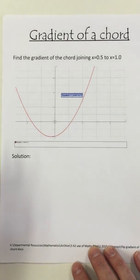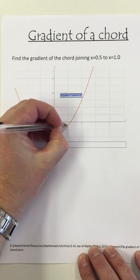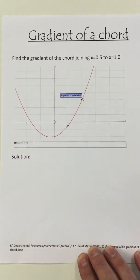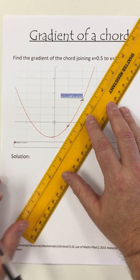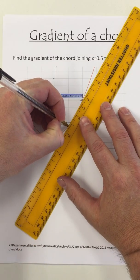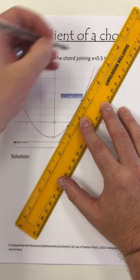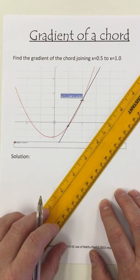So if I just draw it on, so 0.5, 1, draw a line on it to join the points, there we go. I just want the gradient of that line.